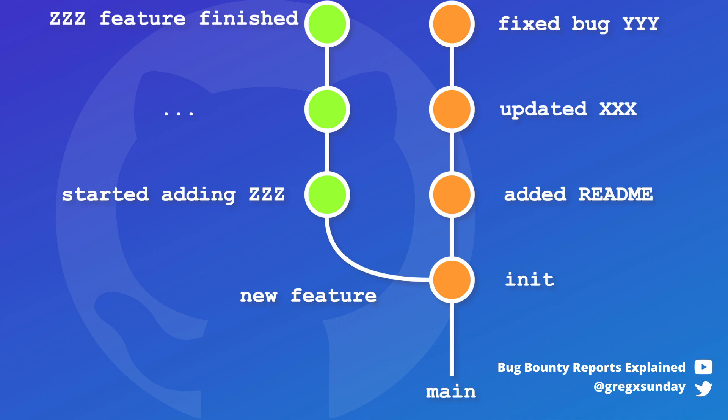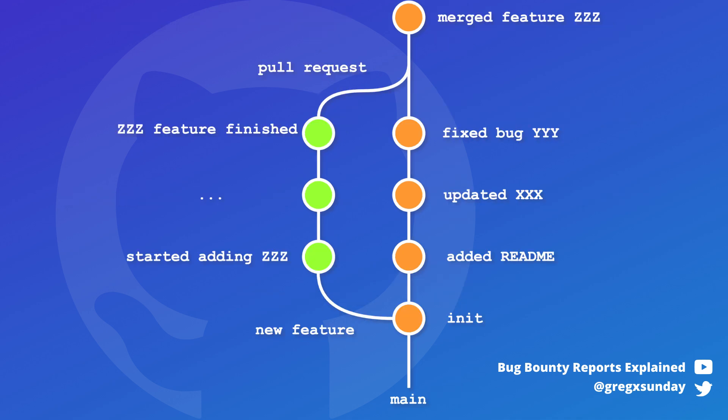What happens when you finish developing your feature and you want to merge it into the main branch? You create a pull request. It's a way to notify other developers in the project that the feature is ready to be in the main branch. After the pull request is accepted, the feature gets merged and it's available to other users.